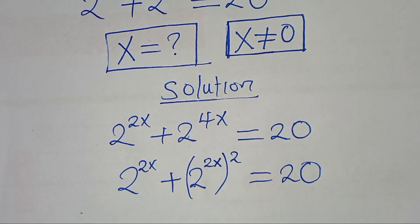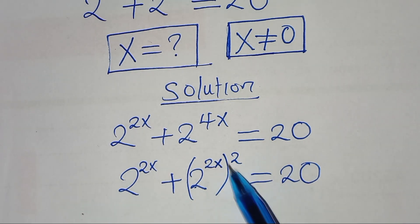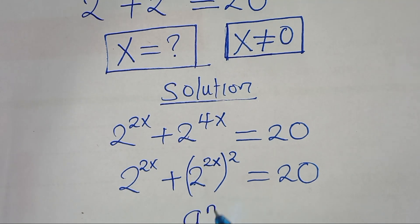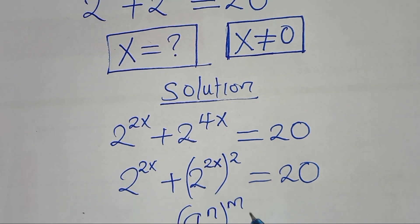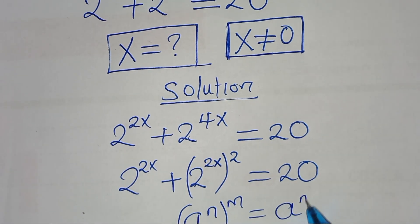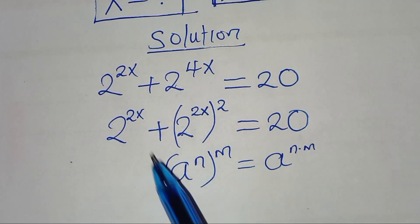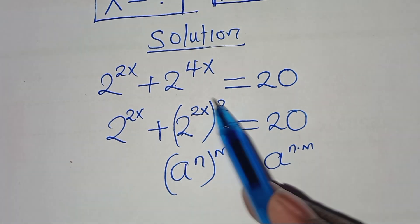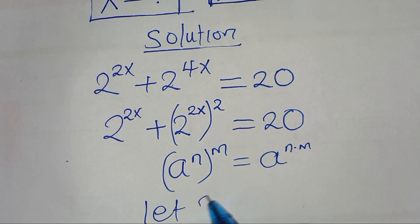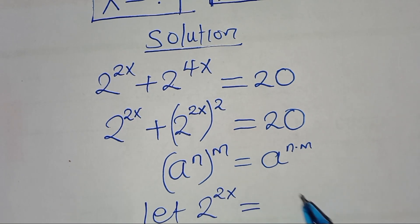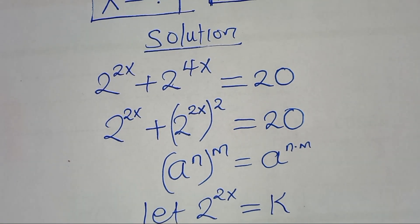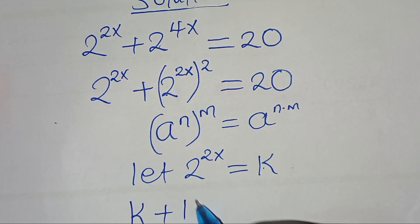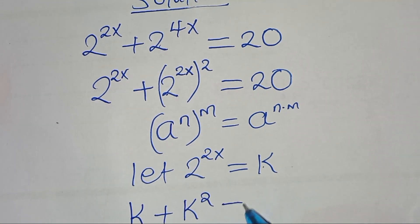Now, 2 to the power of 2x raised to the power of 2 is in the form of a to the power of n raised to the power of m, which can also be expressed as a to the power of n times m. From here, we have 2 to the power of 2x appearing twice, so we can let 2 to the power of 2x be equal to k. Substituting k, we now have k plus k squared, this is equal to 20.